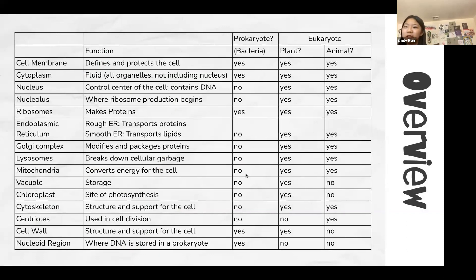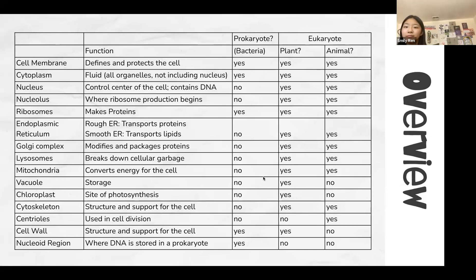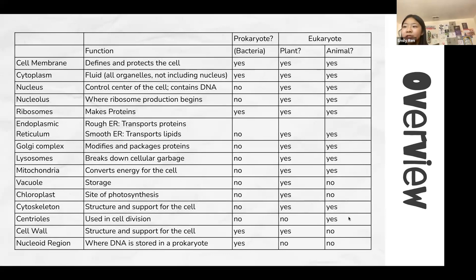The next slide has a chart of different cell parts, which cells they're found in, and what they do — take a screenshot. The cytoplasm is all the fluid in the cell not including the nucleus. The nucleolus is where ribosome production begins. Ribosomes make proteins which are sent to the Golgi system. The rough ER transports proteins, the smooth ER transports lipids and breaks down some substances, the Golgi complex modifies proteins, and lysosomes break down cellular garbage.